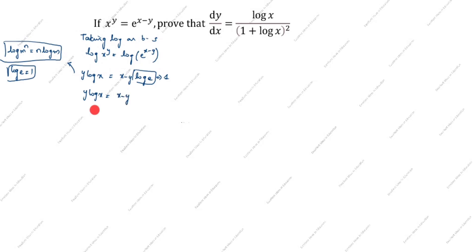We have y log x on one side and x minus y on the other, so bring y to the left side. y log x plus y is equal to x. Taking y outside: y times (log x plus 1) equals x, therefore y is equal to x divided by (log x plus 1).